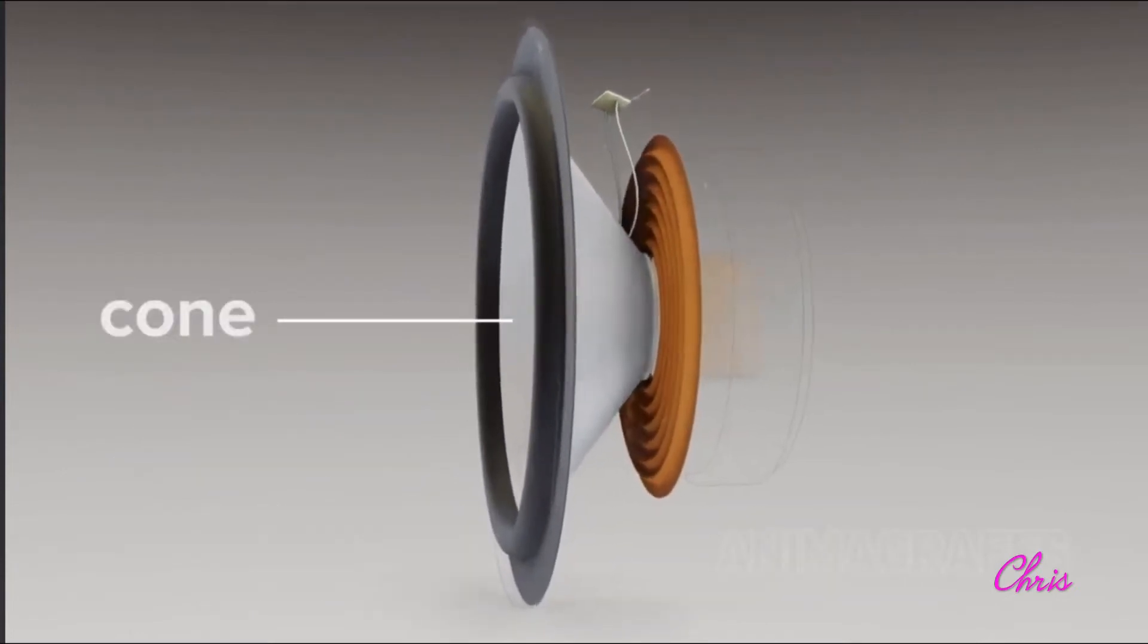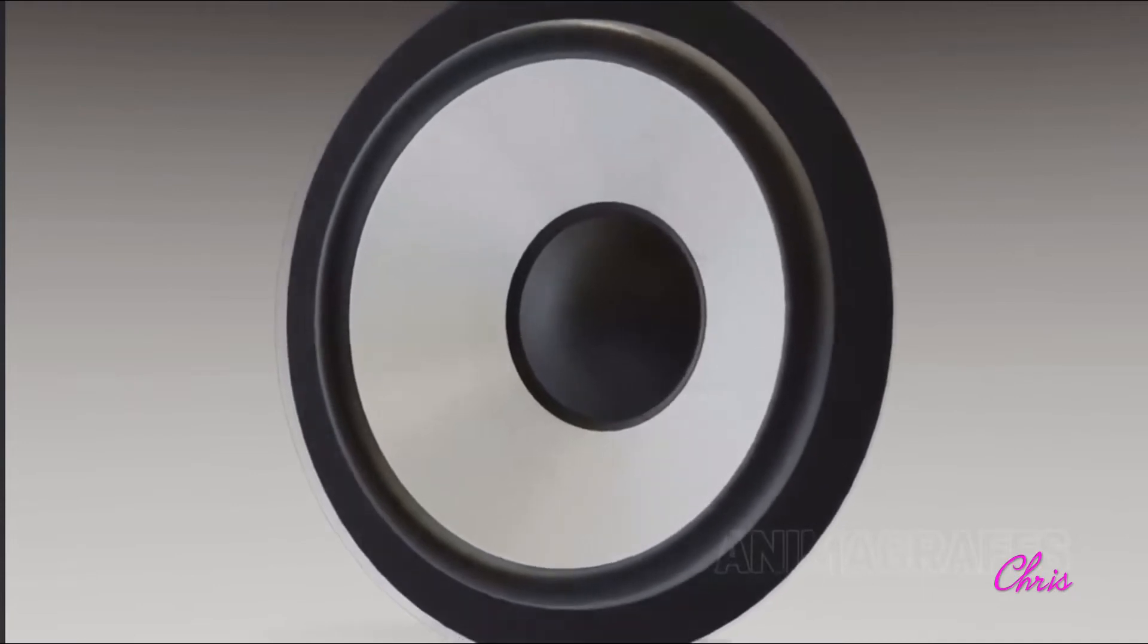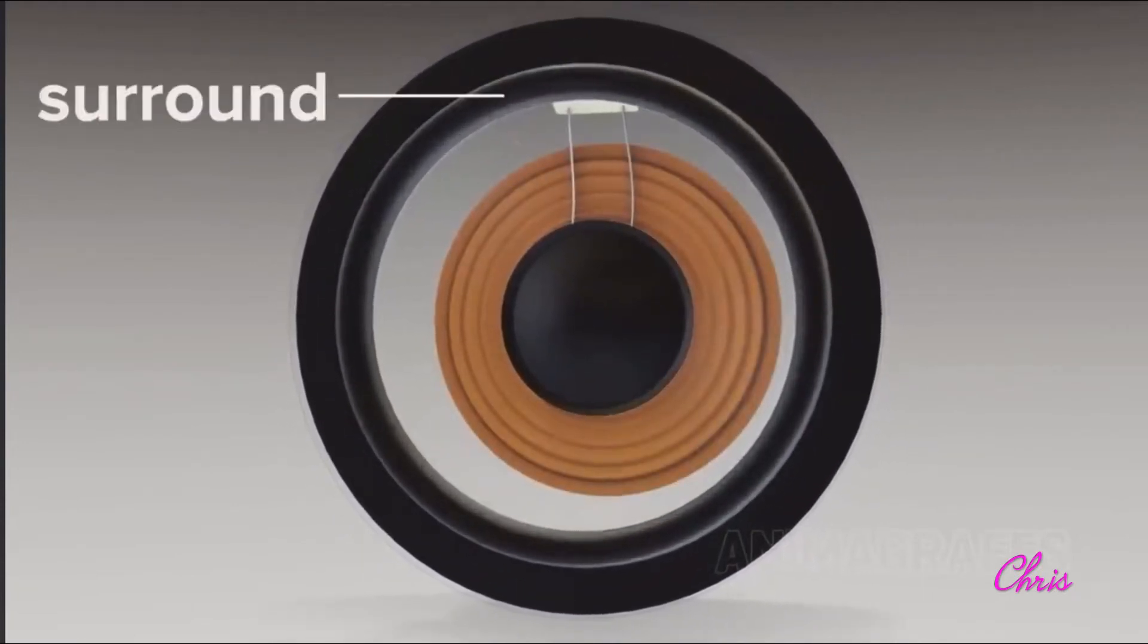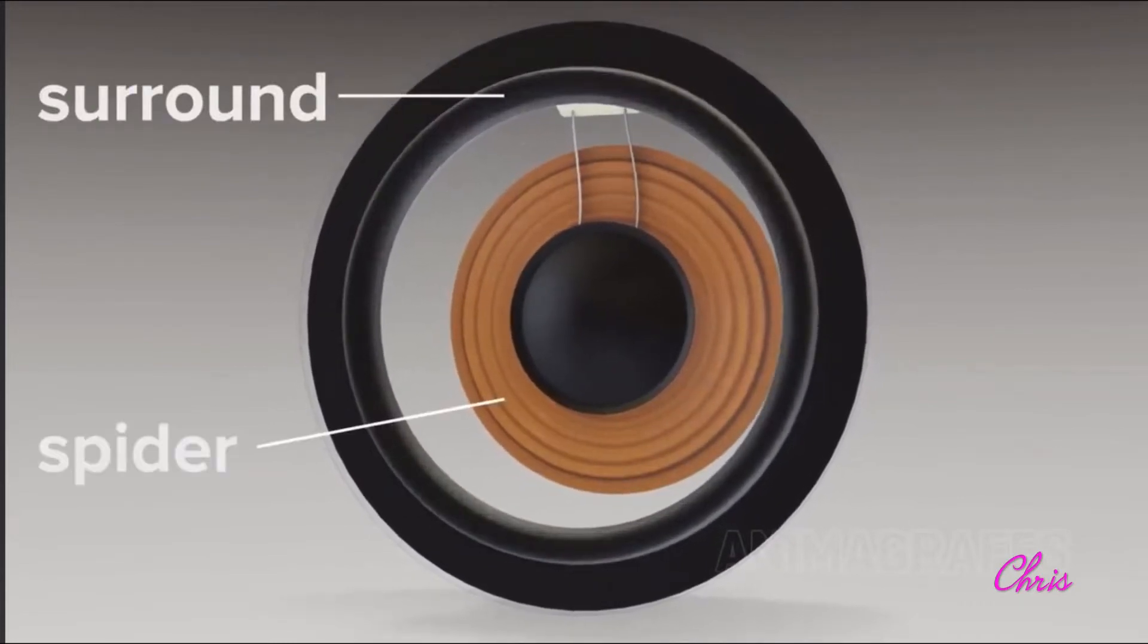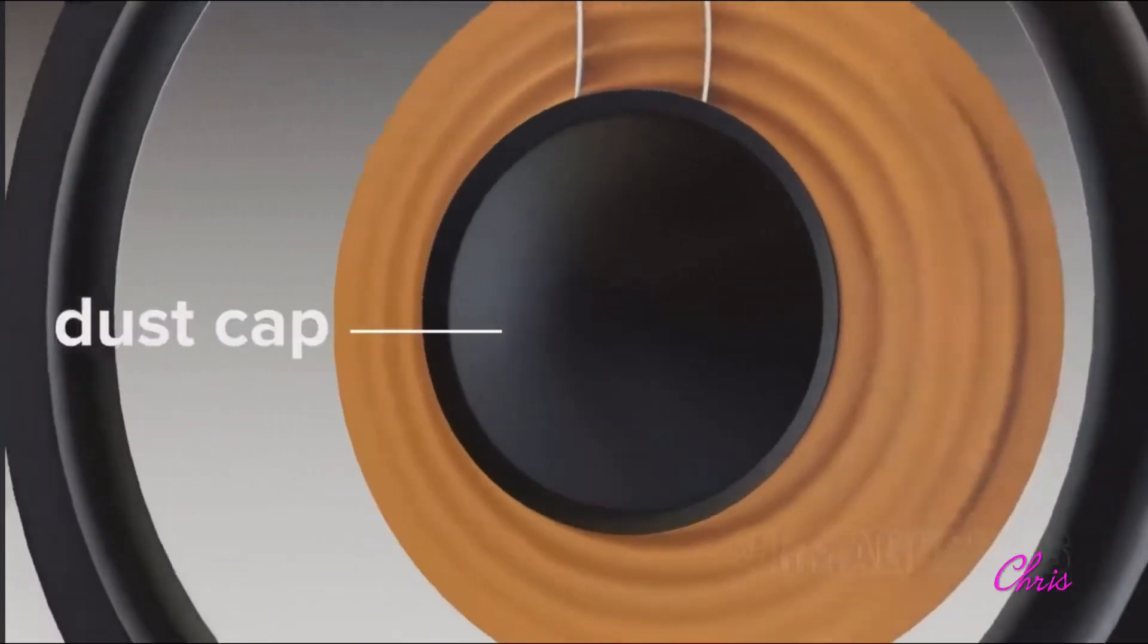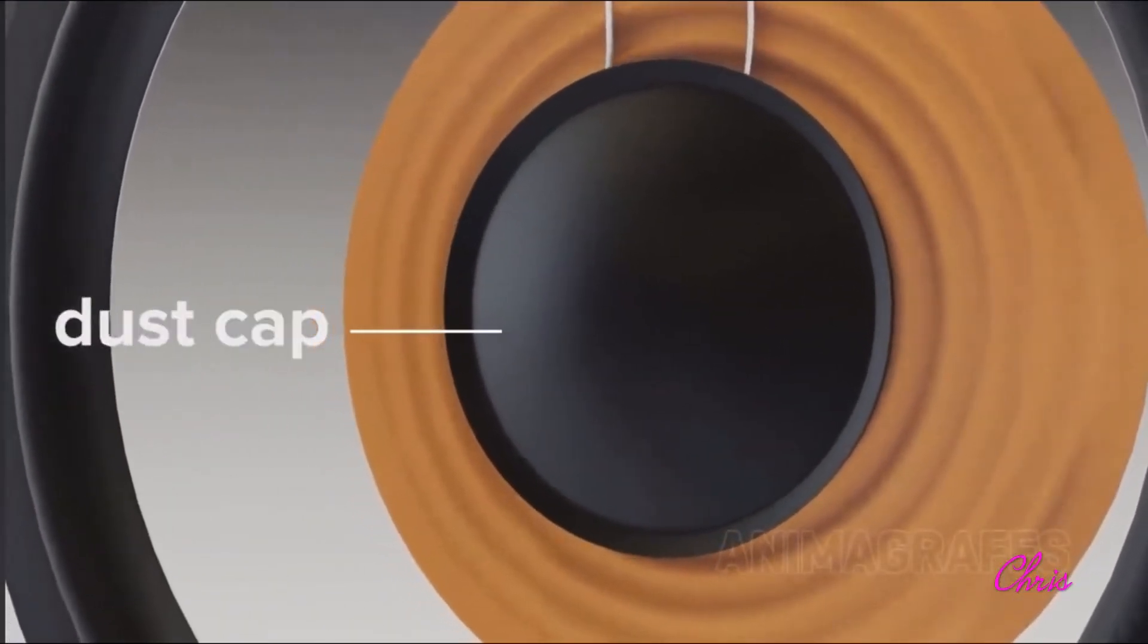The cone translates voice coil movement into waves that travel through the air. It has its own flexible suspension system, made up of the surround on the outside and the corrugated spider at its center. The dust cap keeps debris and unwanted material out of sensitive internal areas.